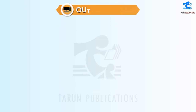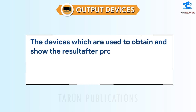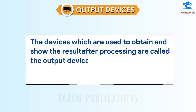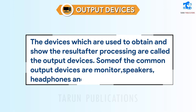Output Devices: The devices which are used to obtain and show the result after processing are called the output devices. Some of the common output devices are monitor, speakers, headphones and printer.